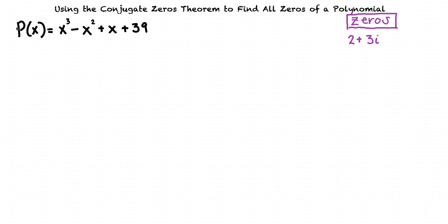First, we need to identify how many other zeros we are looking for. To do this, we will use the linear factors theorem. Because p of x is a polynomial of degree 3, p of x has exactly three zeros. We've been given one of those zeros — 2 plus 3i — so now we have two more to find.